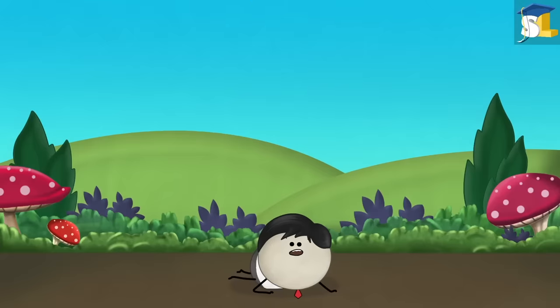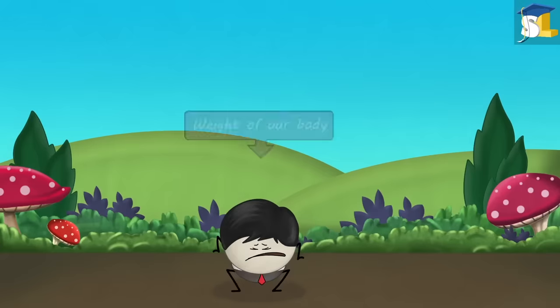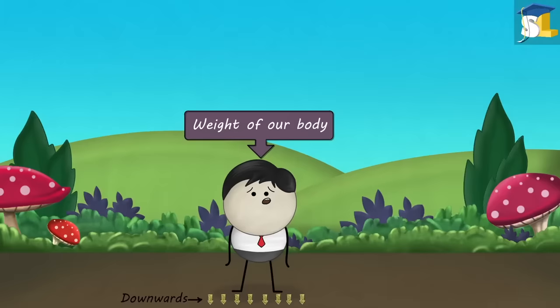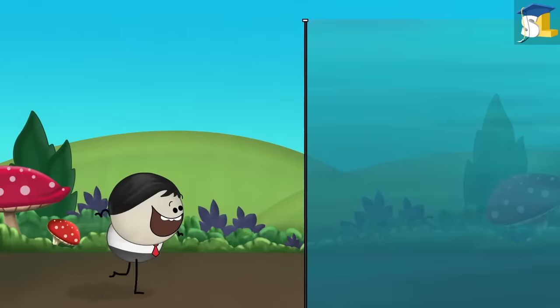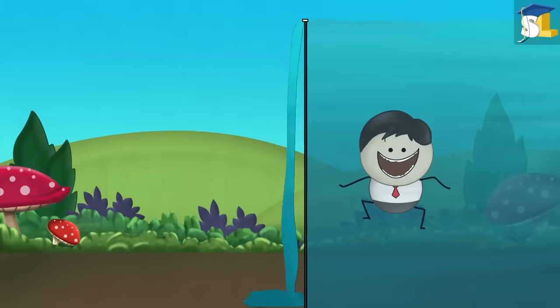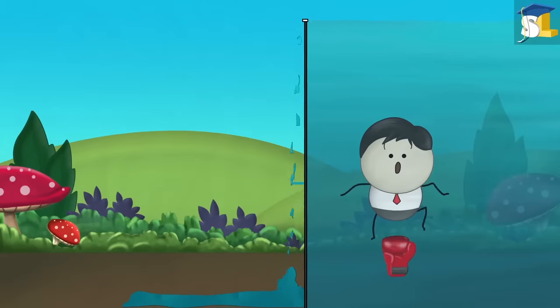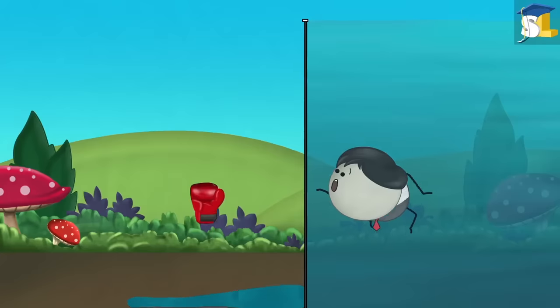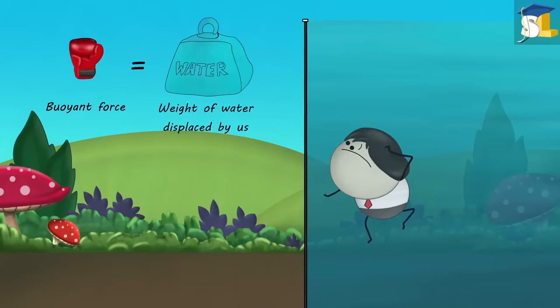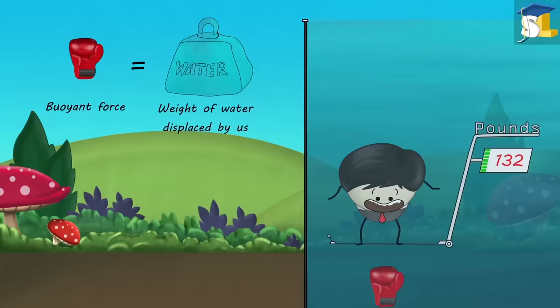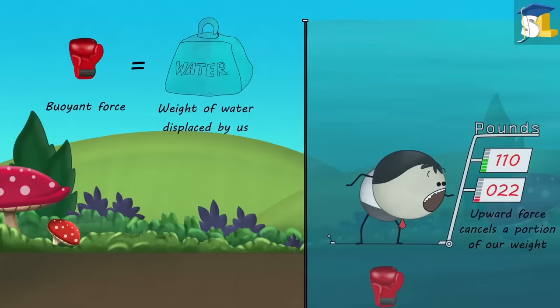Gravity always pulls us downwards. Hence, the weight of our body always acts downwards, whether we are on ground or in water. However, according to Archimedes principle, when we are in water, we experience an upward force. That is, buoyant force which is equal to the weight of water displaced by us. This upward force cancels a portion of our weight causing us to weigh less in water.